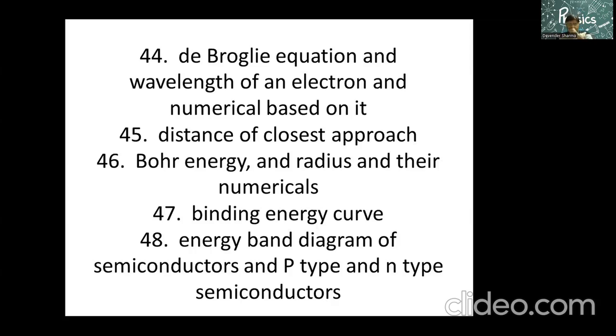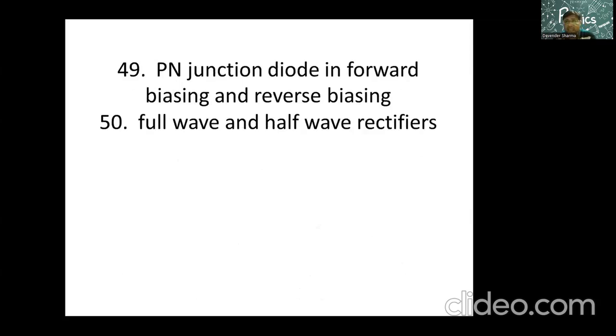Moving on to the last unit but not the least, energy band diagram, very important of all things, semiconductors, conductors, insulators, and of course p-type, n-type, how donor level and acceptor level changes, so you have to deal with that thing also. Finally, p-n junction diode in forward bias and reverse bias, their VI characteristics, and full wave rectifier and half wave rectifier, why they are called full wave and why they are called half wave rectifier. So these are the topics from my side.